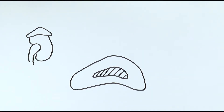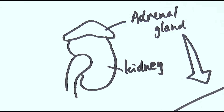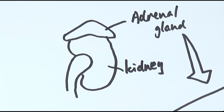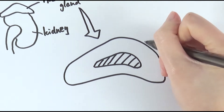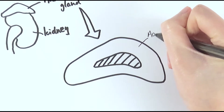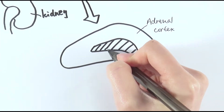In this video, we'll be looking at the structure and the function of the adrenal gland. The adrenal gland is found on top of the kidney. If we do a cross-section of the adrenal gland, it will look something like this. It's mainly made up of two different parts: the part on the outside and the part on the inside. The part on the outside is called the adrenal cortex, and the bit on the inside is called the adrenal medulla.